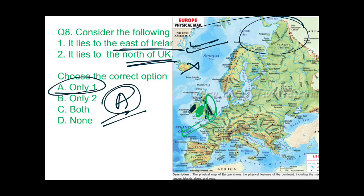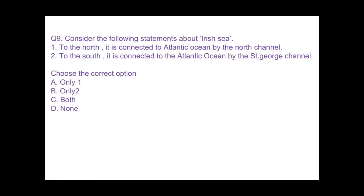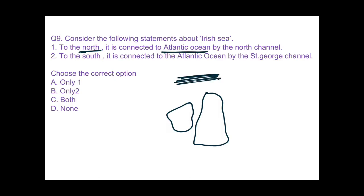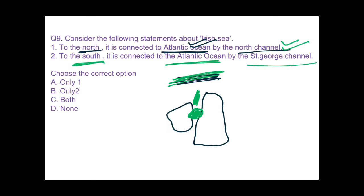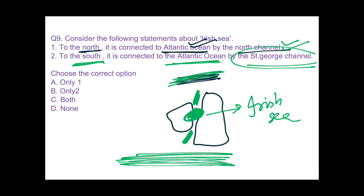Question 9: consider the following statements about the Irish Sea again. Statement 1 — to the north it connects to the Atlantic Ocean by the North Channel: correct. Drawing a rough map — Ireland on one side, UK on the other; to the north lies the Atlantic Ocean connected by the North Channel. Statement 2 — to the south it connects to the Atlantic Ocean by the St. George's Channel: also correct. Both statements are right — to the north is the North Channel and to the south is the St. George's Channel.